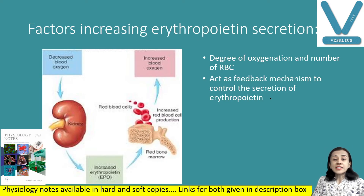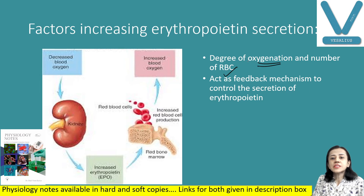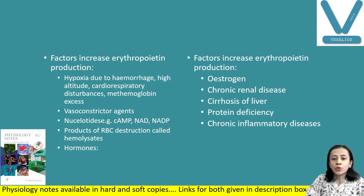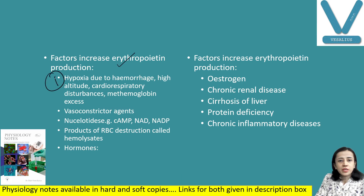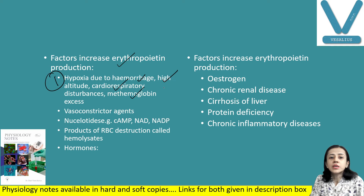Factors that increase erythropoietin secretion include hypoxia — due to hemorrhage, high altitude, cardiorespiratory disturbances, altered hemoglobin, or excess methemoglobin. The number of RBCs in circulation provides a negative feedback: when numbers decrease, erythropoietin secretion increases. Vasoconstrictor agents may also produce hypoxia and increase erythropoietin secretion.